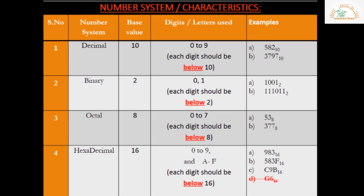The last number system is hexadecimal, with base value 16. The digits used are 0 to 9 and alphabets A to F — 16 digits in total. Any digit which is more than 9 would have two digits, so to avoid the problem those two-digit values are given symbols from A to F. A represents value 10, B represents value 11, and so on. The value of F is 15.